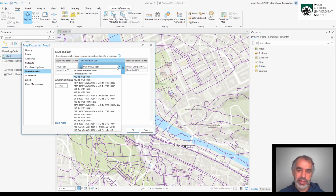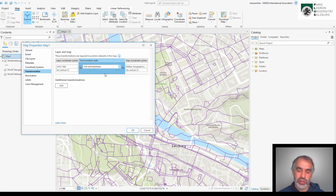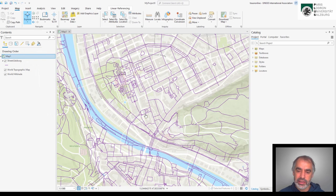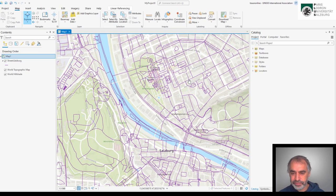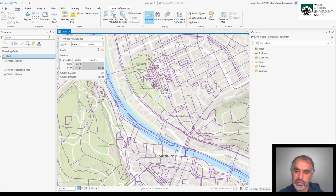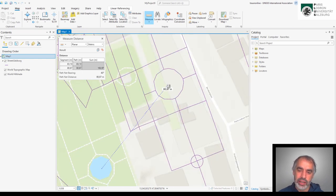So let's check what happens if we do not use any transformation, if we do as if the data was based on the same geodetic datum. If we pretend this and when I measure here, for example, the distance between the fountain in Mirabell gardens and the respective location in the street network, you see it's around 80 meters.